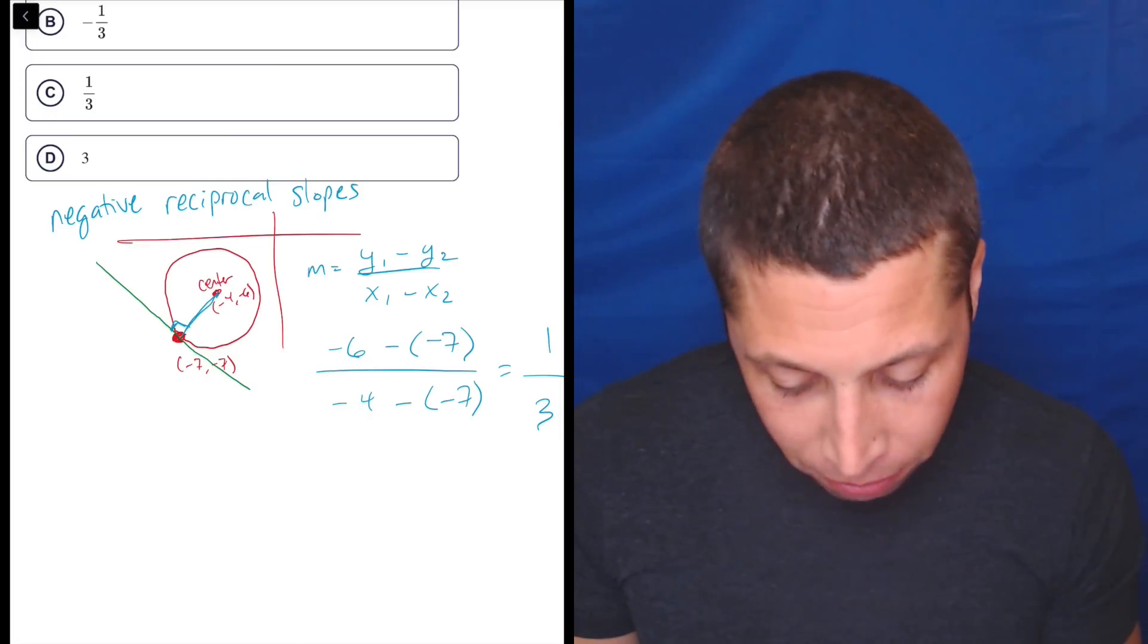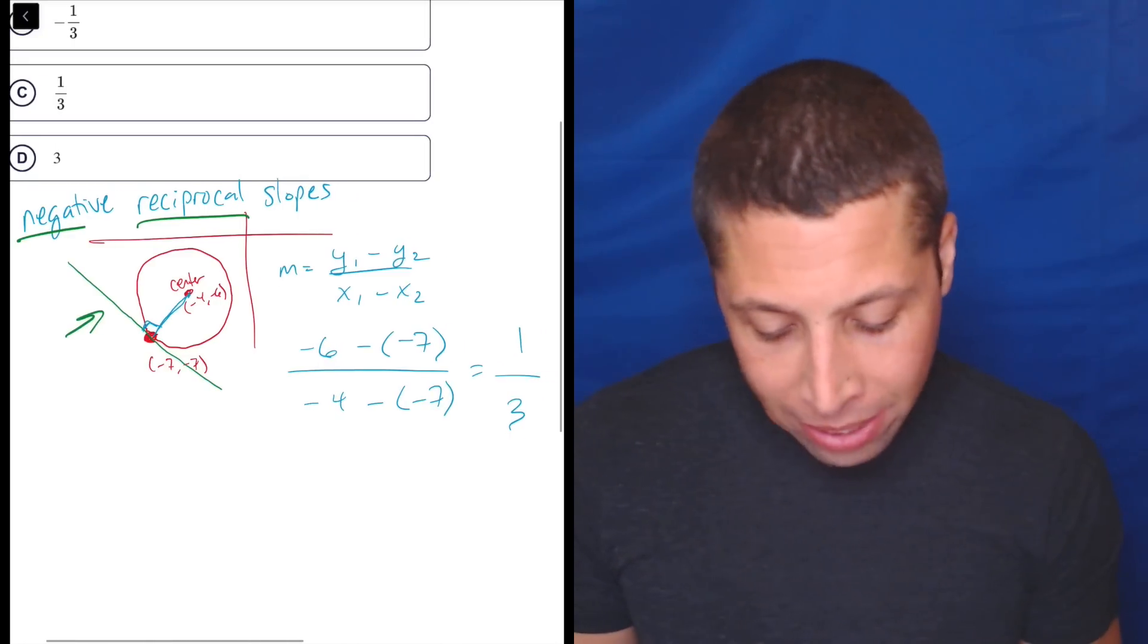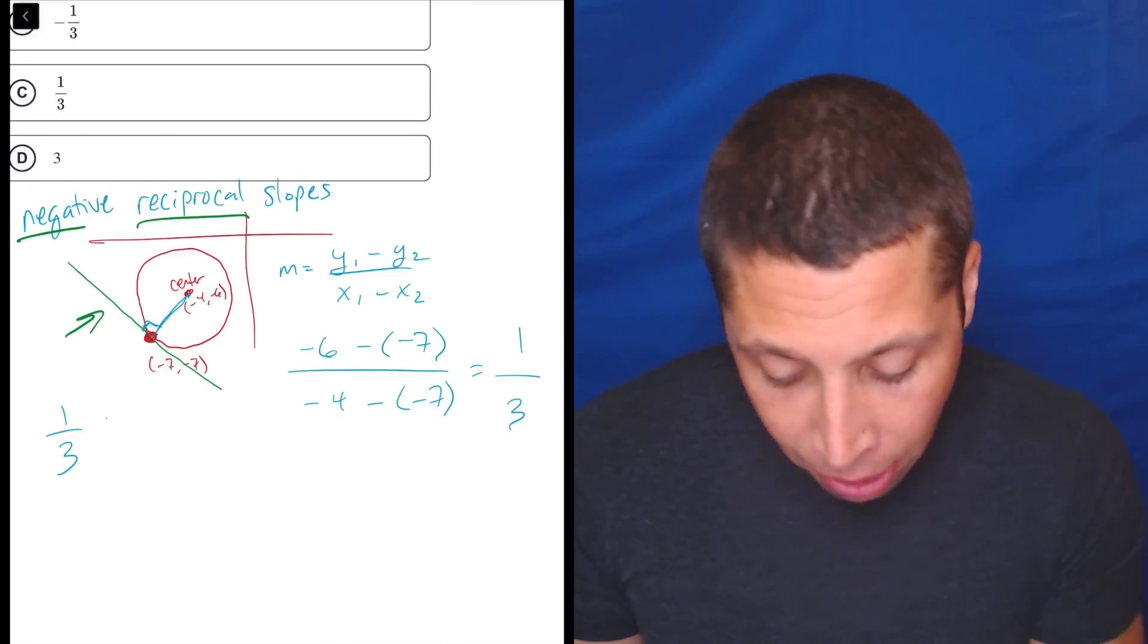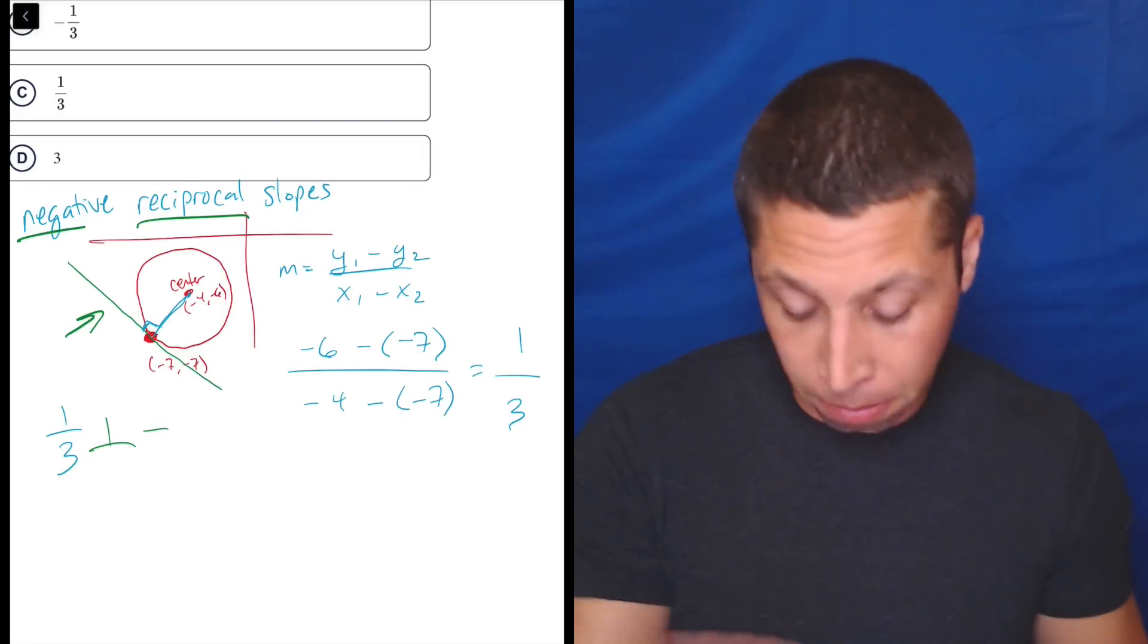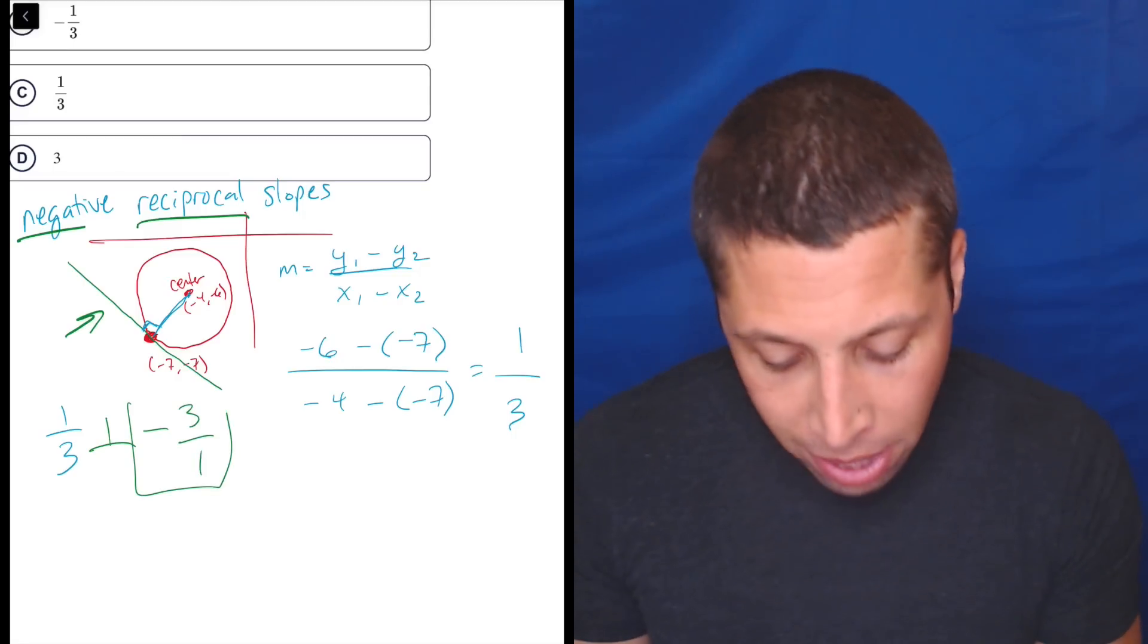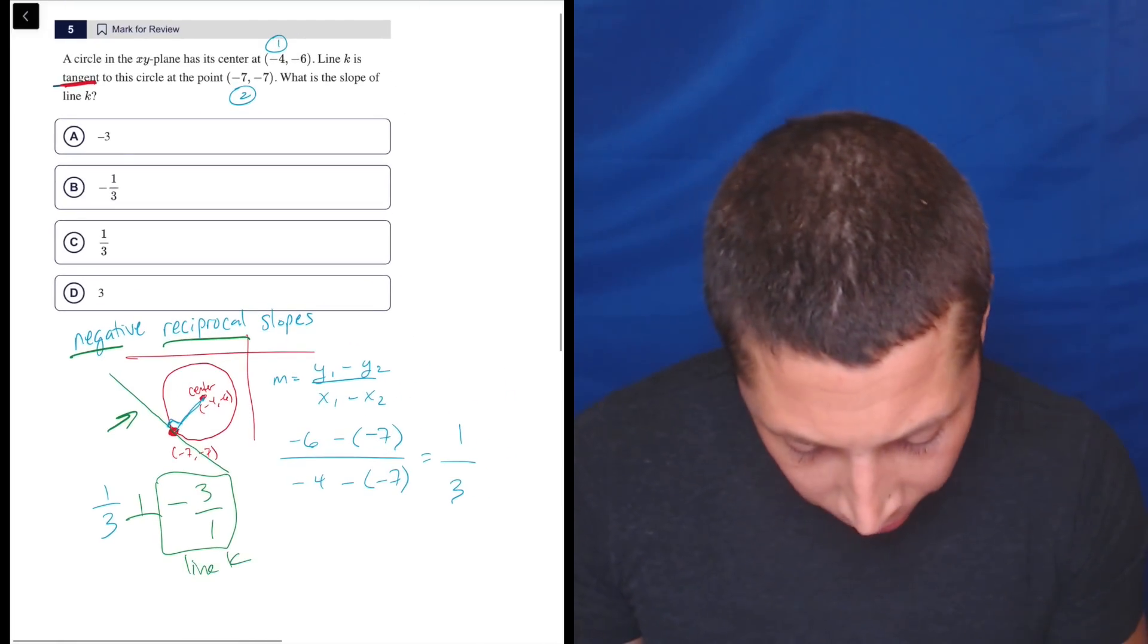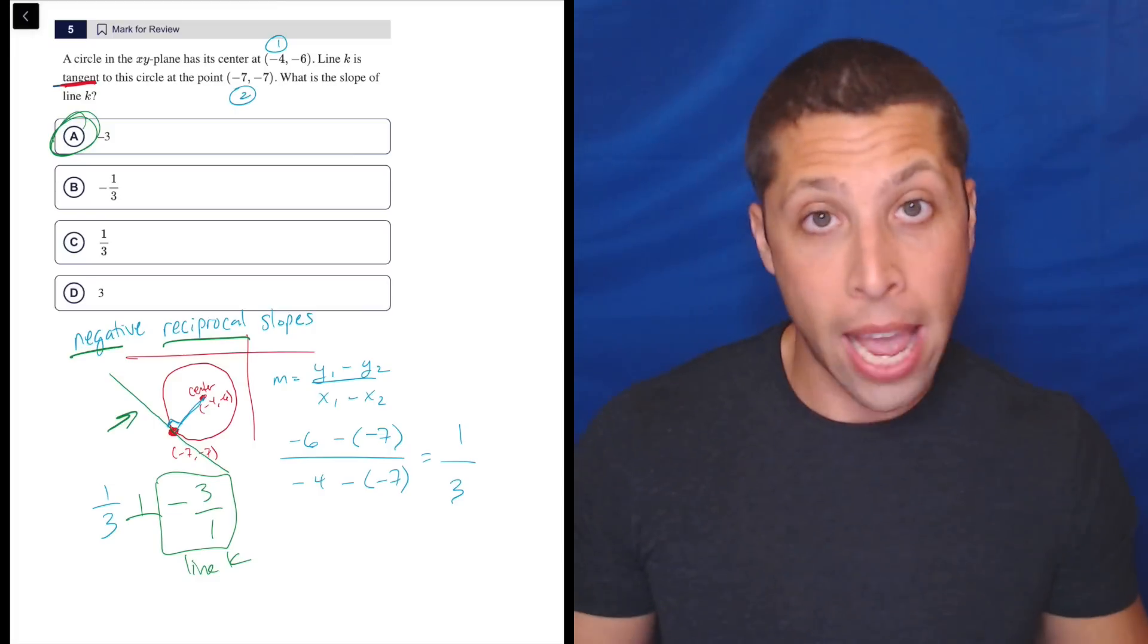Now let's do the slope of this. Well, it has to be the negative reciprocal. What that means is we take that one third and we flip it and we reverse the sign. So negative means it becomes negative if it was positive, becomes positive if it was negative. And reciprocal means you flip a fraction upside down. So one third becomes three over one. So that is the slope of line K. So negative three over one is just negative three. So choice A is the answer.